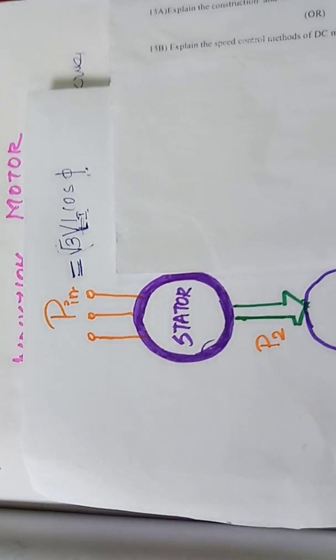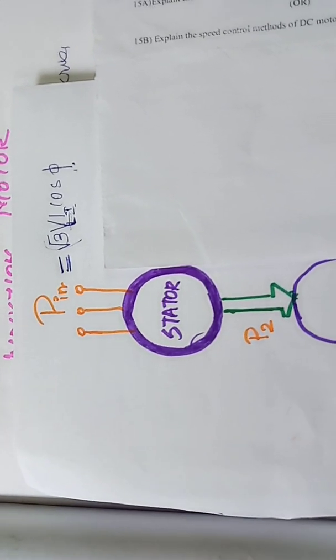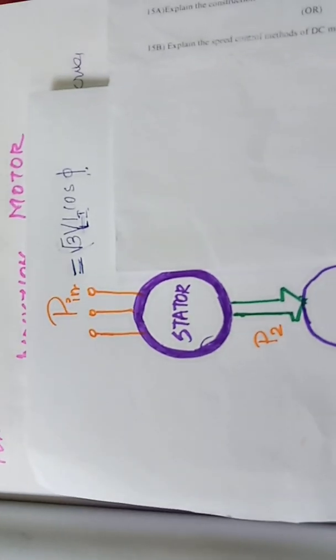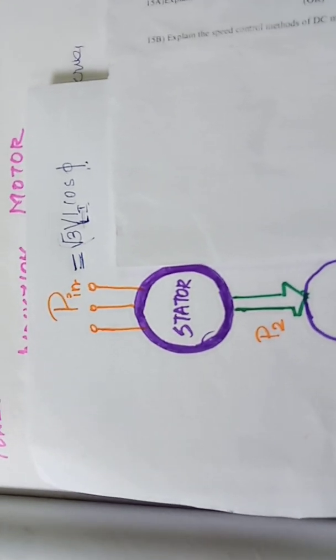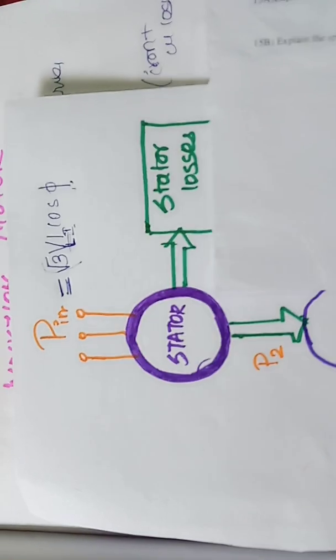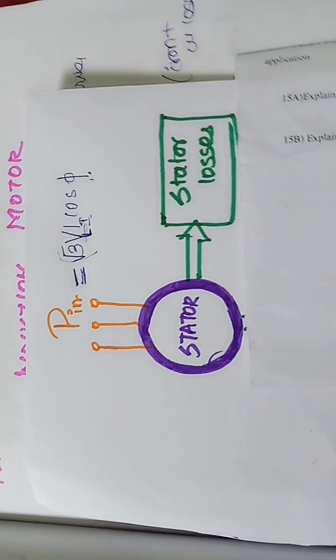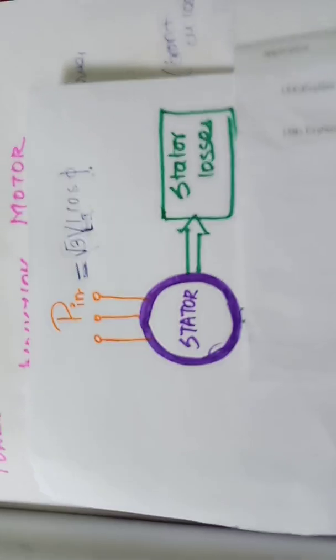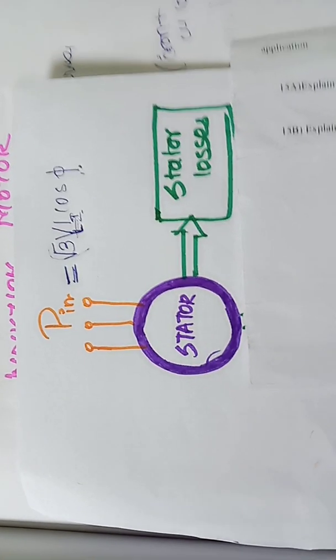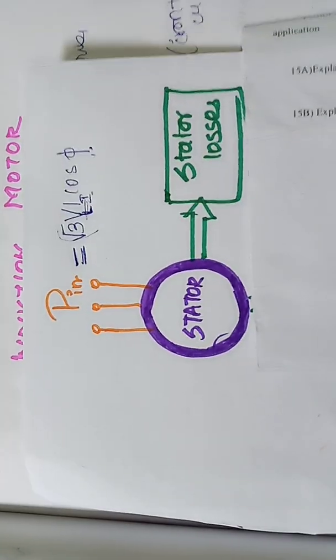We have losses under running conditions — magnetization and other problems. These are called stator losses. Stator losses are iron loss plus copper loss. Iron loss is produced by the core material, and copper loss is produced by the windings. Here iron losses are dominant. So we have a remaining power called P2.